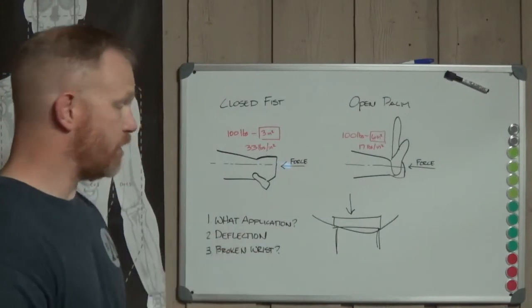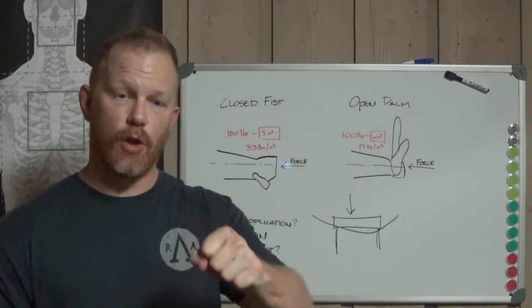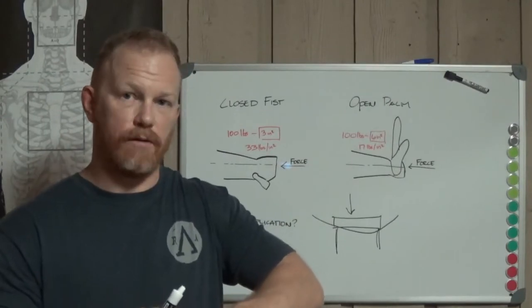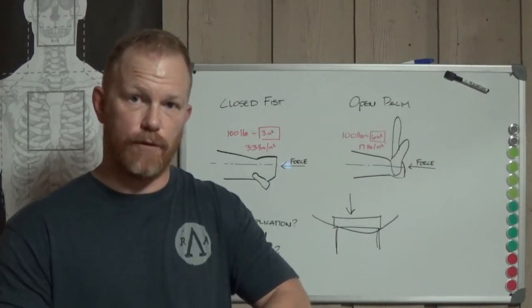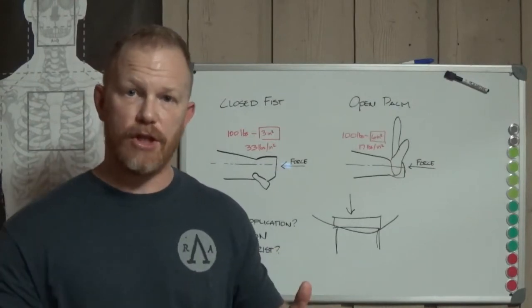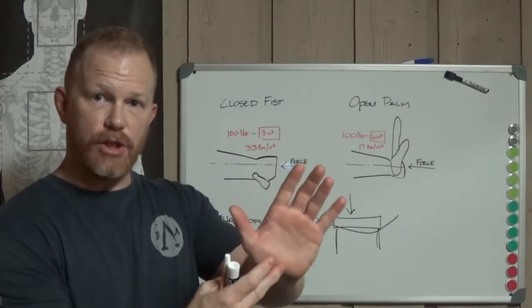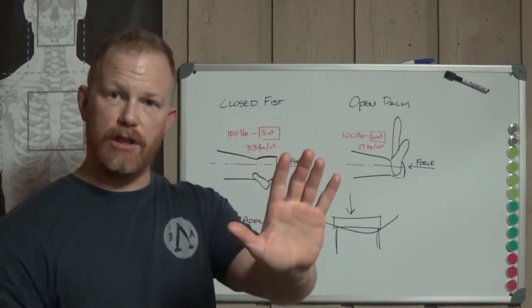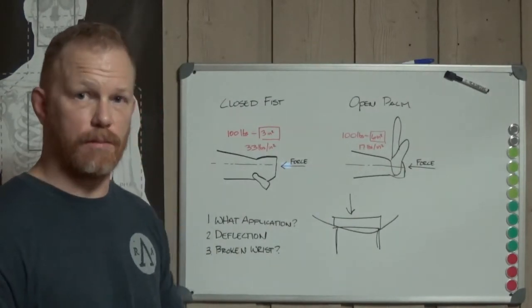So deflection becomes an issue versus a closed fist. One of the things you notice with a closed fist is that when it's closed properly and it's tight, there's almost no give. You have a solid, firm surface that has got zero deflection for all intents and purposes. Because all the bones line up against other bones, there's no deflection there. As opposed to the palm heel strike, which you can line up all the bones and that's fine, but there's always going to be that meaty cushion in the front that is going to give you a certain degree of deflection. So that's going to create a reduction in the amount of force that you can apply on that strike.